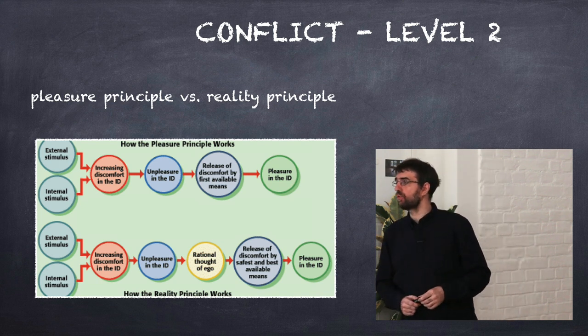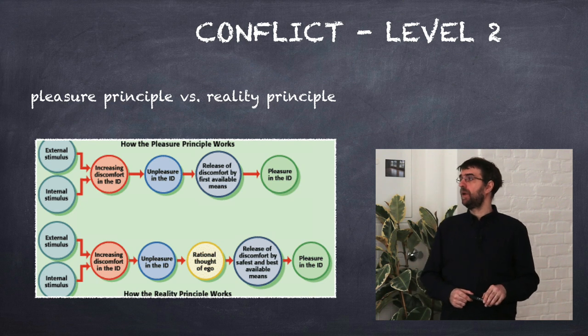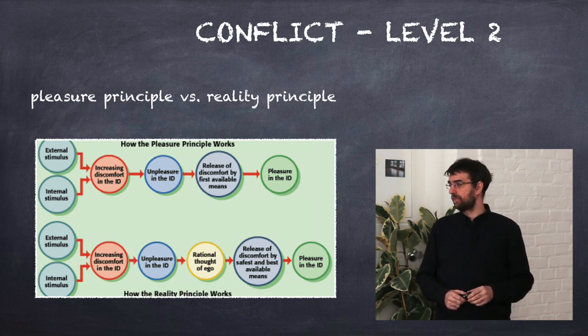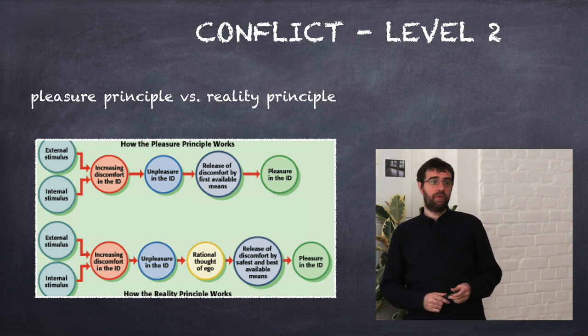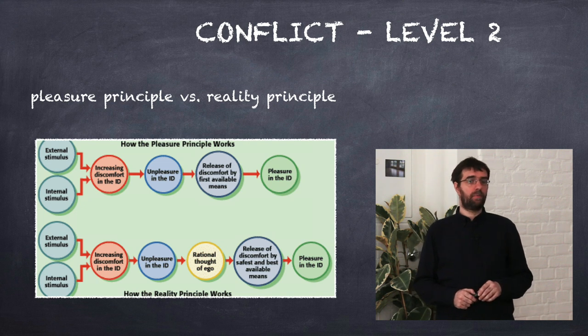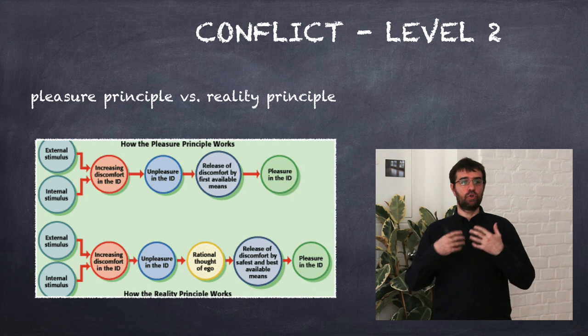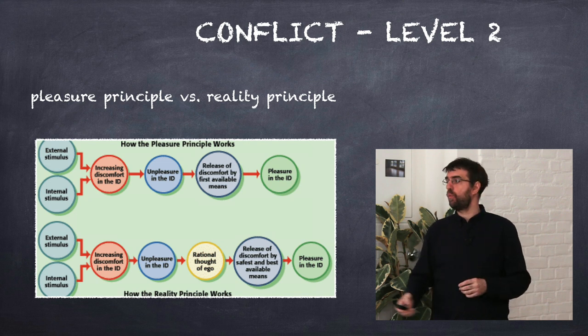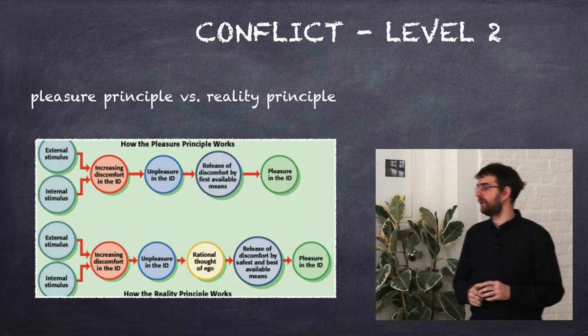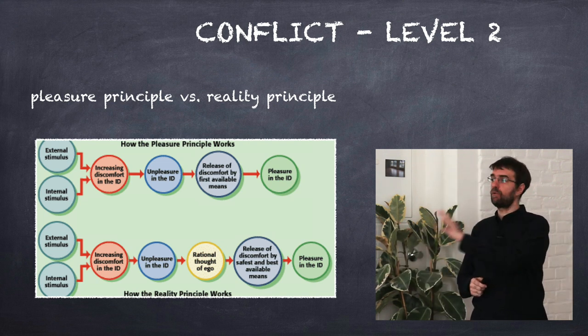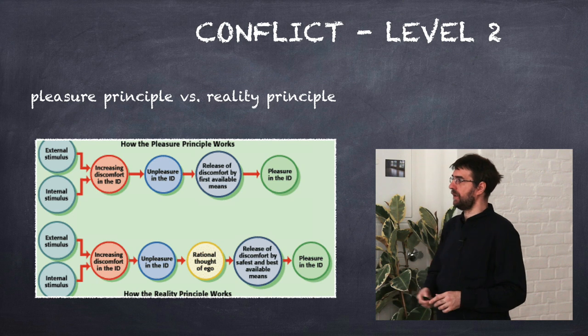Freud described those in 1911 and probably 80 or 90 years later, one now very famous person won the Nobel Prize for Economy by describing a dual process theory where there are two principles which sound completely the same as Freud has described them here.